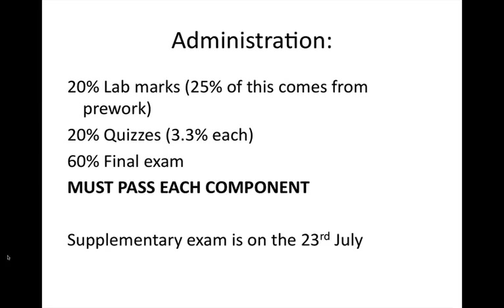So first of all, just some administration details. Just a reminder, the lab marks are worth 20% of your final mark, and 25% of this lab mark comes from your pre-work. There's also Moodle quizzes. There's six of these through the session. You've now got access to quiz three. This is worth 20% of your final mark. Each quiz is worth 3.3%. The final exam is worth 60%, and you need to pass each component in order to pass the exam. The supplementary exam will be held on the 23rd of July. Please don't make travel plans on the 23rd of July.